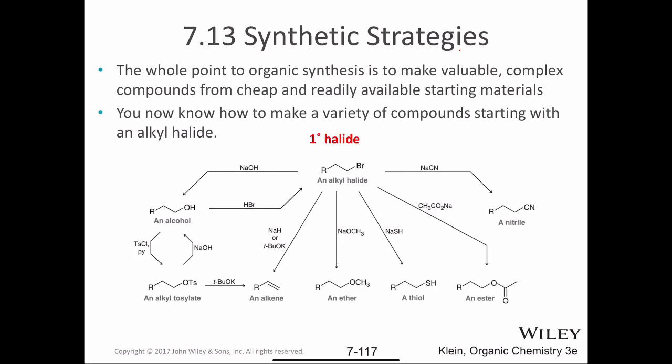You know how to make a variety of compounds starting with an alkyl halide. If I start with a primary alkyl bromide — it could be an iodide or a chloride — we could also think of a tosylate, mesylate, or triflate as being similar in reactivity to a primary halide.